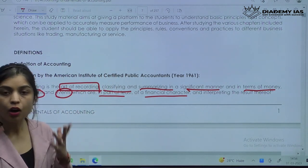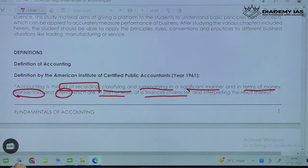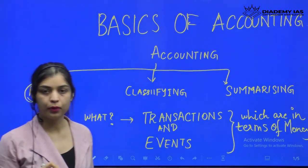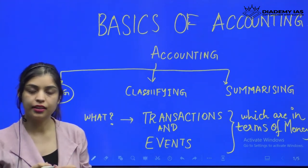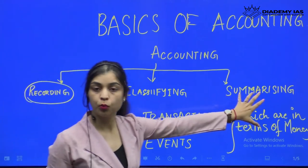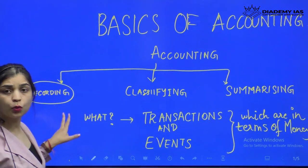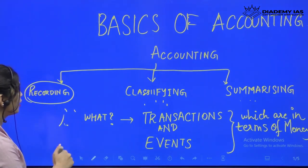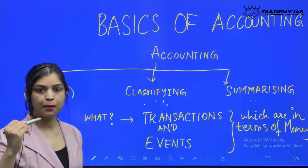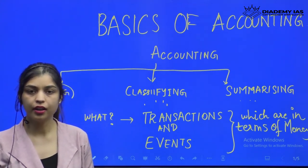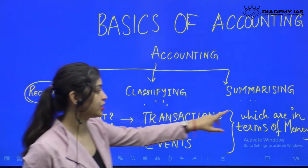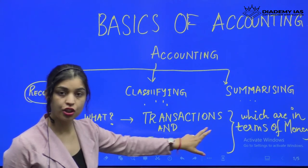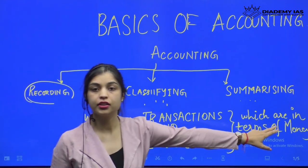That may sound like too many words — how do I digest this? Accounting is the art of recording, classifying, and then summarizing information. Please understand the definition first, and I will explain what each individual word means in accounting. When we say recording, classifying, and summarizing, it is always with respect to two elements: transactions or events that are in terms of money.